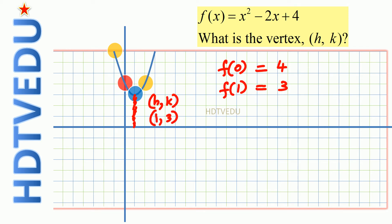When you have 0, you get 4. So 0, 4. So 1, 2, 3, 4. The point is 0, 4.